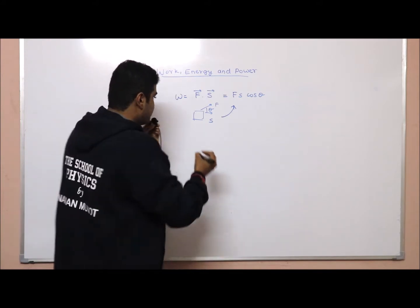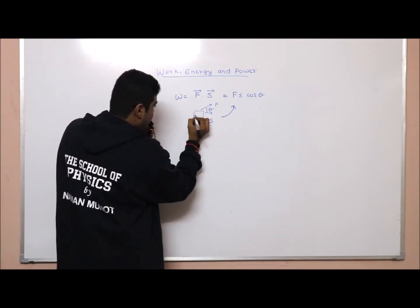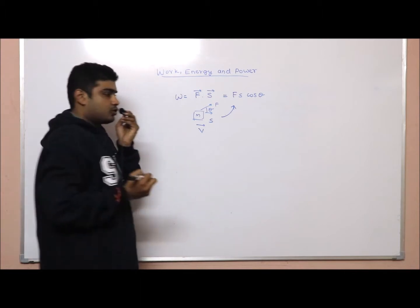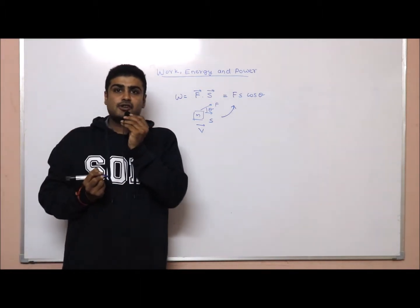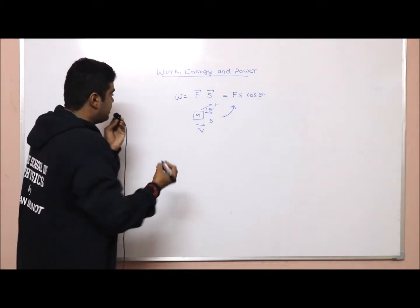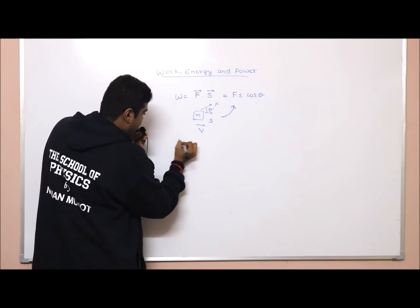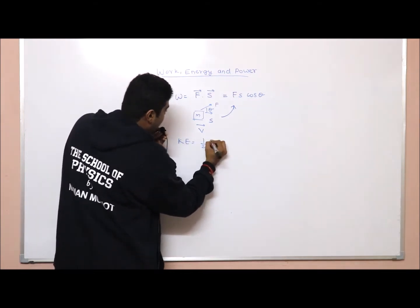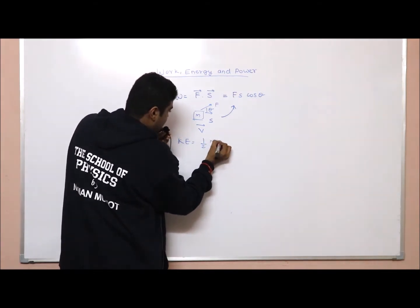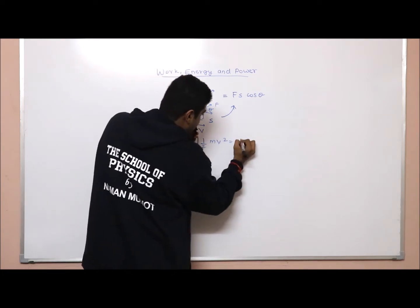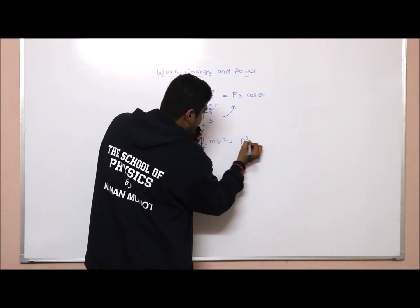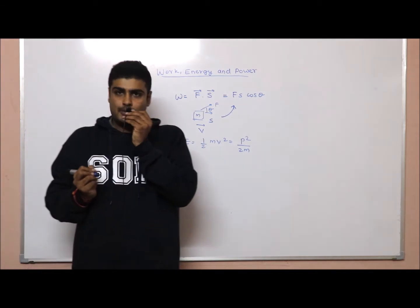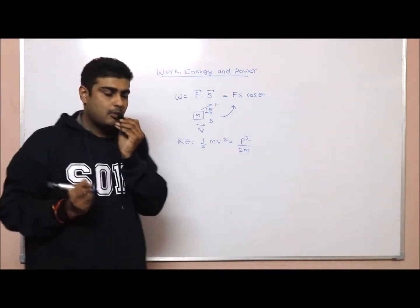Now suppose the velocity of a block of mass m is v. The kinetic energy of this object will be ½mv², or we can also write it as p²/2m, where p is the momentum.